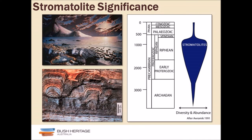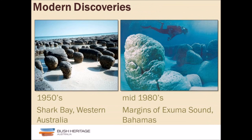We didn't know modern stromatolites existed until the 1950s, when the first discovery of marine stromatolites was made in Shark Bay, Western Australia by Phil Playford. In the mid-1980s, they were found along the margins of the Exuma Sound in the Bahamas. Those are the two marine formations we still know of today, though there are also some marine stromatolites in the supertidal zone in South Africa.